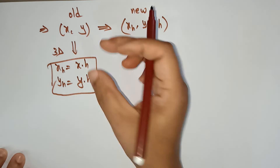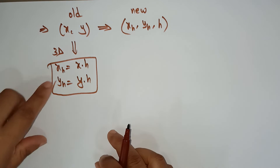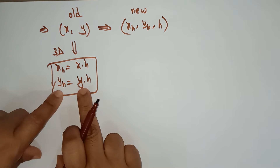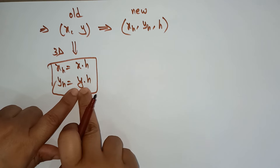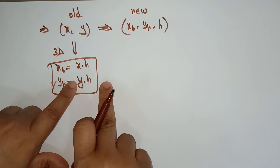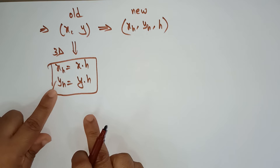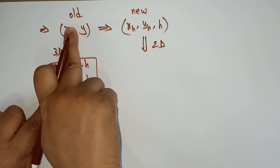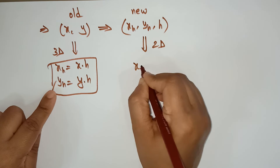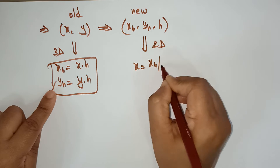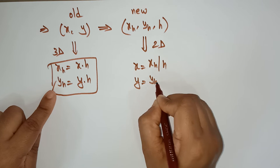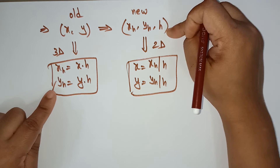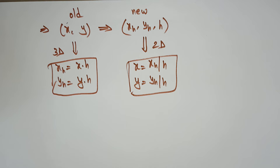Remember this formula: if you want to convert from 2D to 3D, the new coordinate XH = X × H and YH = Y × H — old value multiplied by the homogeneous coordinate gives the new values. Now, suppose you want to convert back to 2D: X = XH ÷ H and Y = YH ÷ H. If you divide the new values by the homogeneous coordinate, you get the old values X, Y.